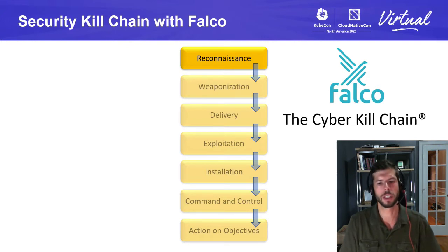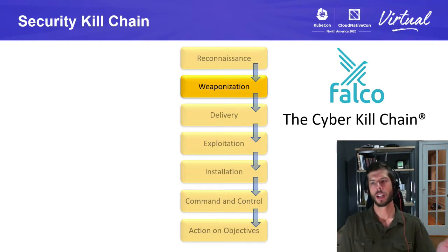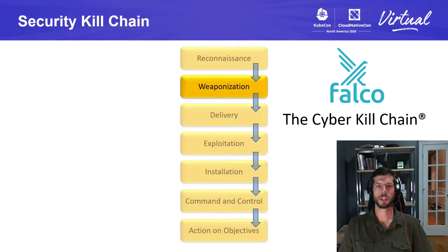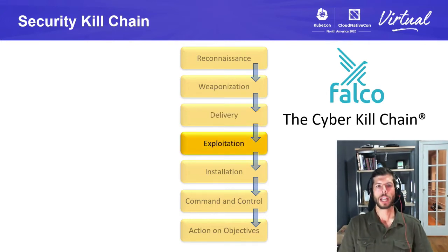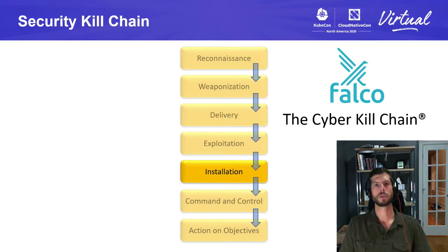Reconnaissance is the fingerprinting stage where an attacker is trying to figure out what's running — including whether it's a containerized application. Weaponization is building out the exploit, coupling malicious code with a known vulnerability. Delivery is getting that malicious code or exploit onto the target system. Exploitation is the successful attempt at exploiting a vulnerability or misconfiguration. Installation is once they've exploited the system and want to install malware or something to infect the host and move on with their other tasks.